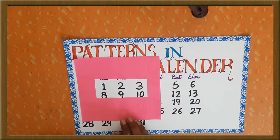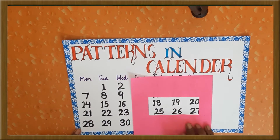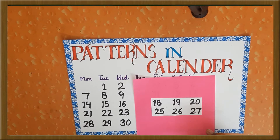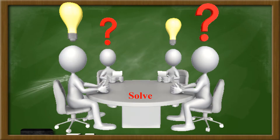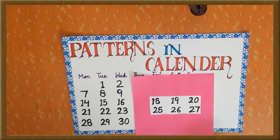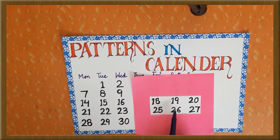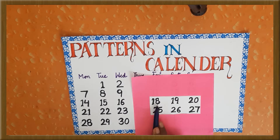Let's take another example. Now solve this magic rectangle. 18 plus 27 will be equal to 20 plus 25, and that will also be equal to 19 plus 26. So the sum of these two numbers will be the same.